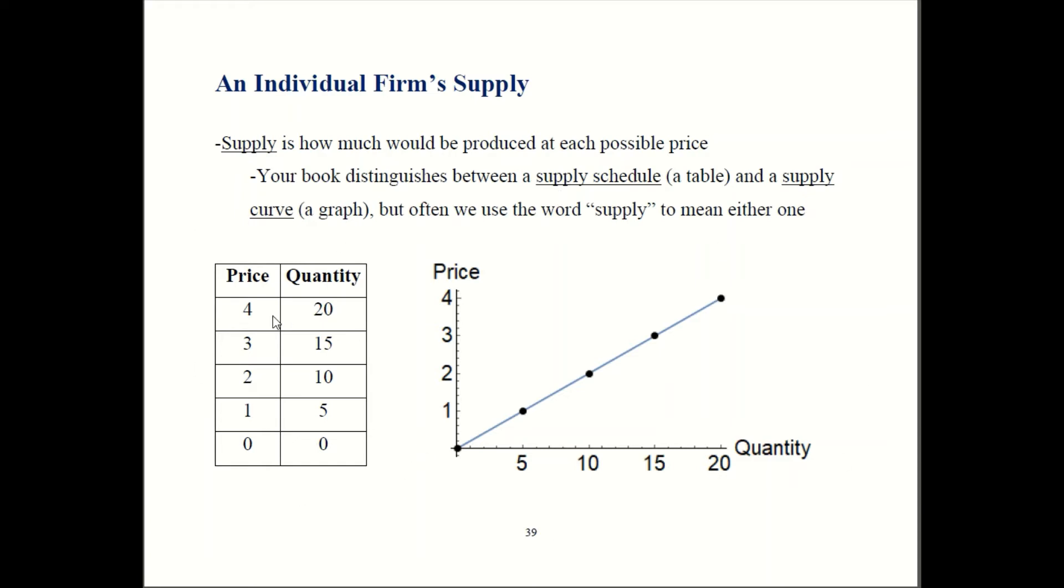When the price is 4, the firm is producing 20 units. We show it in the graph over here. When price goes down to 3, they only produce 15. That's over there, 3, 15. When price is 2, they produce 10. That corresponds to this point in the graph. Price of 1, produce 5. That's over here. And when the price is 0, they don't have any incentive to produce anything at all.